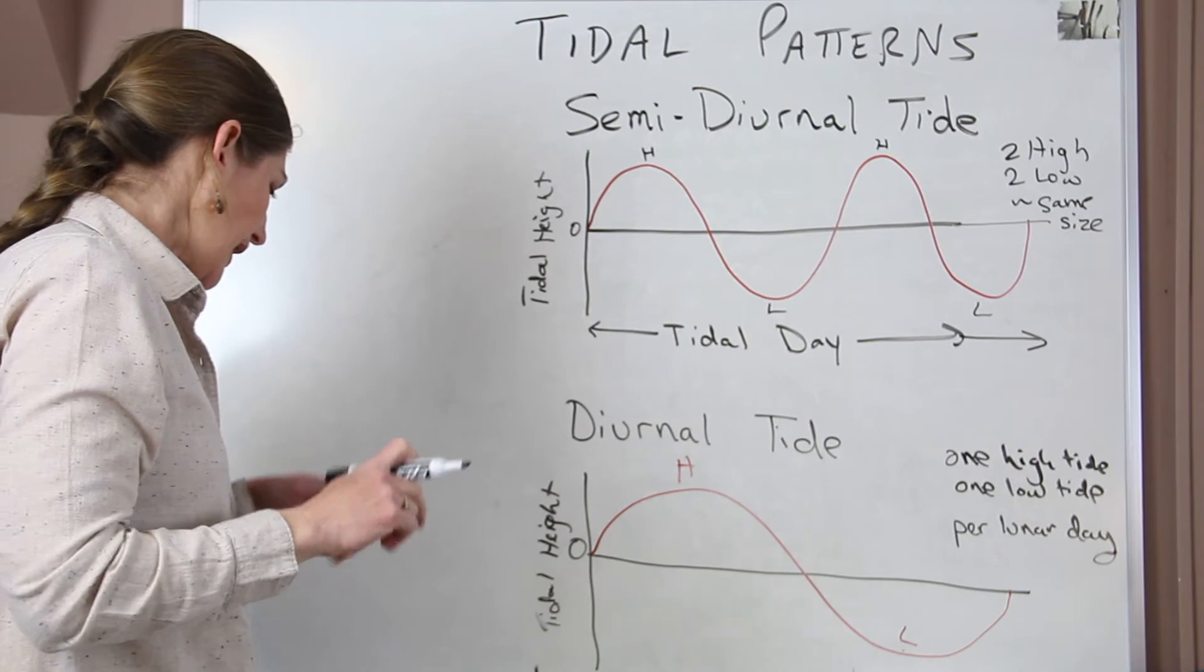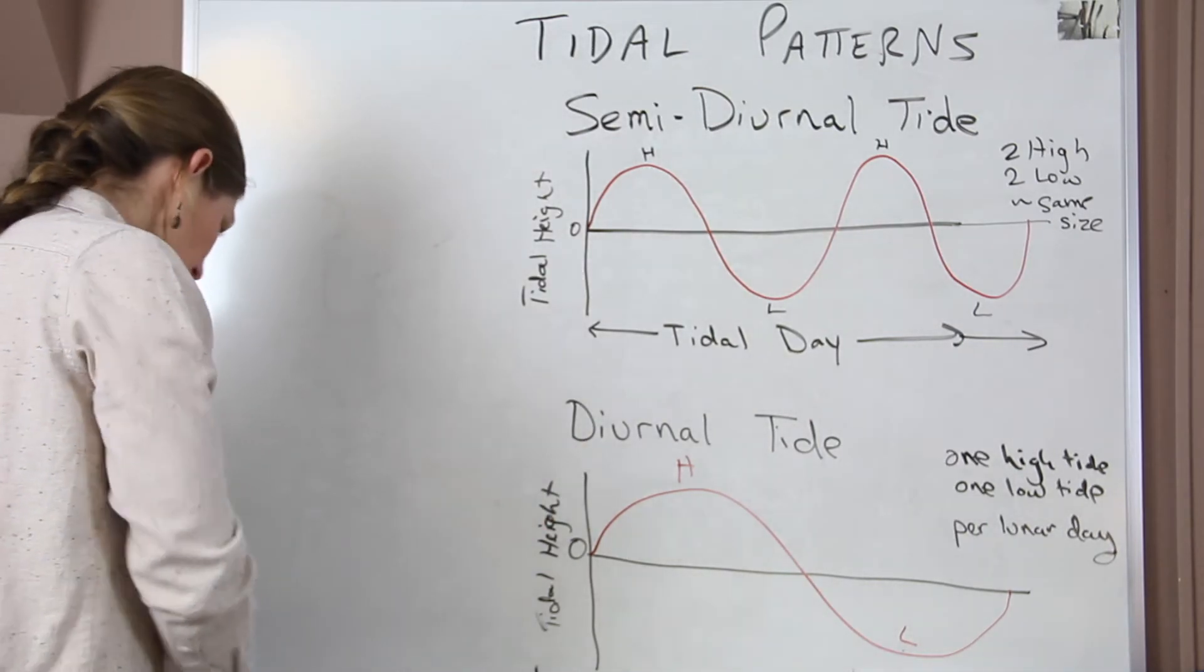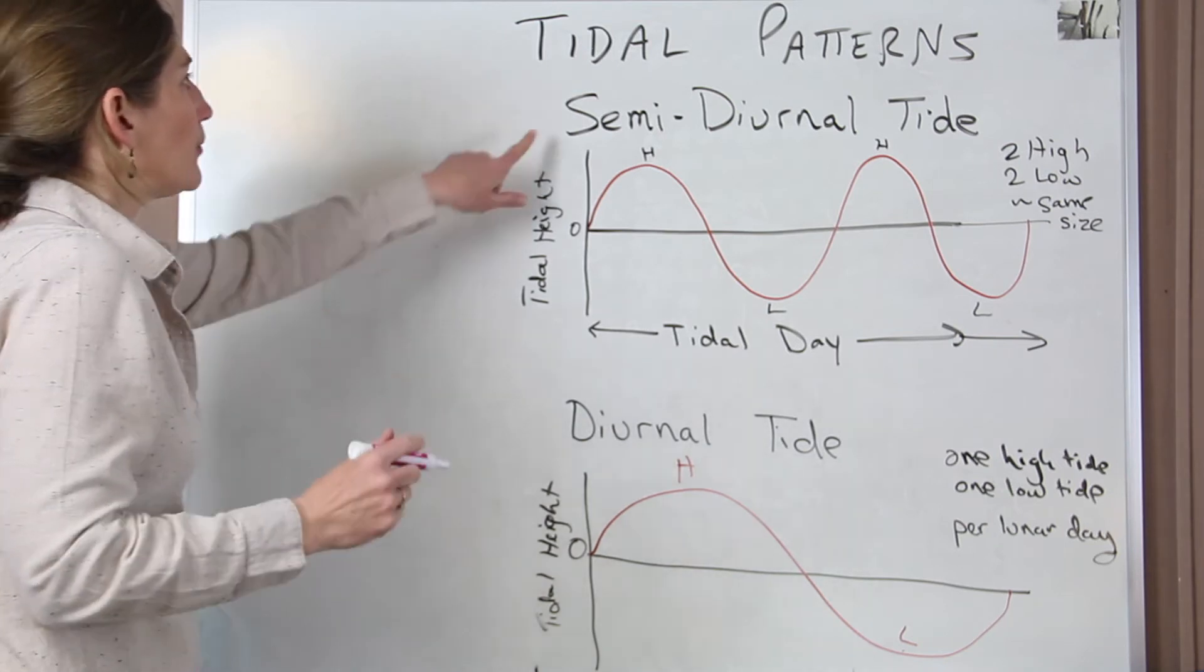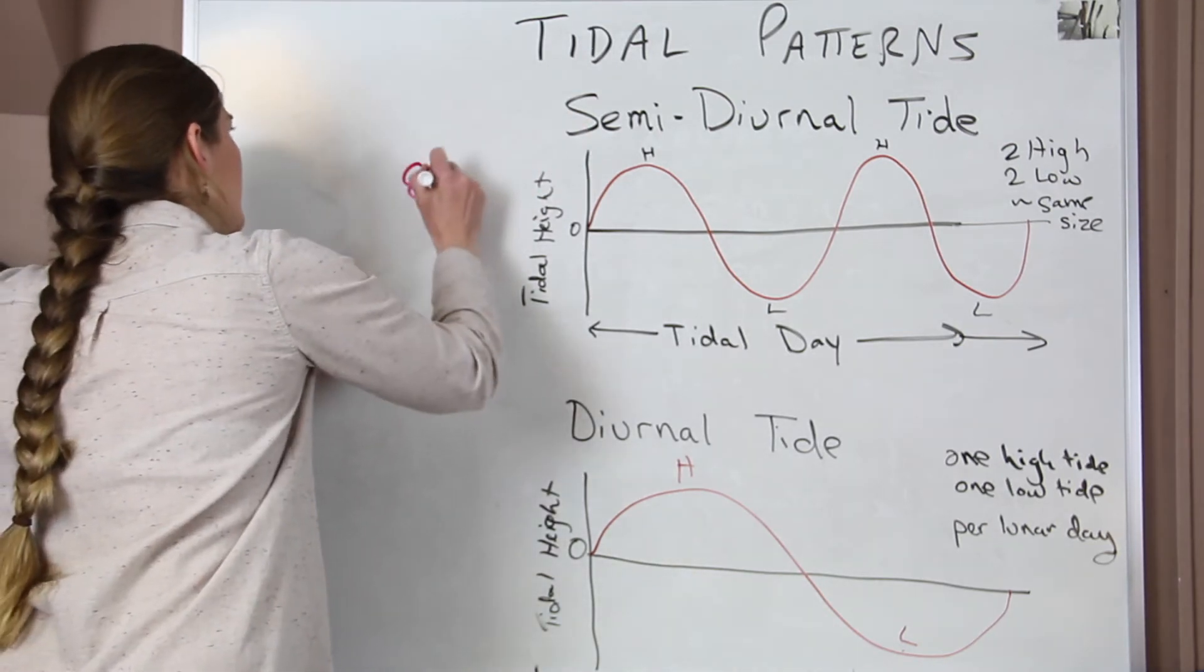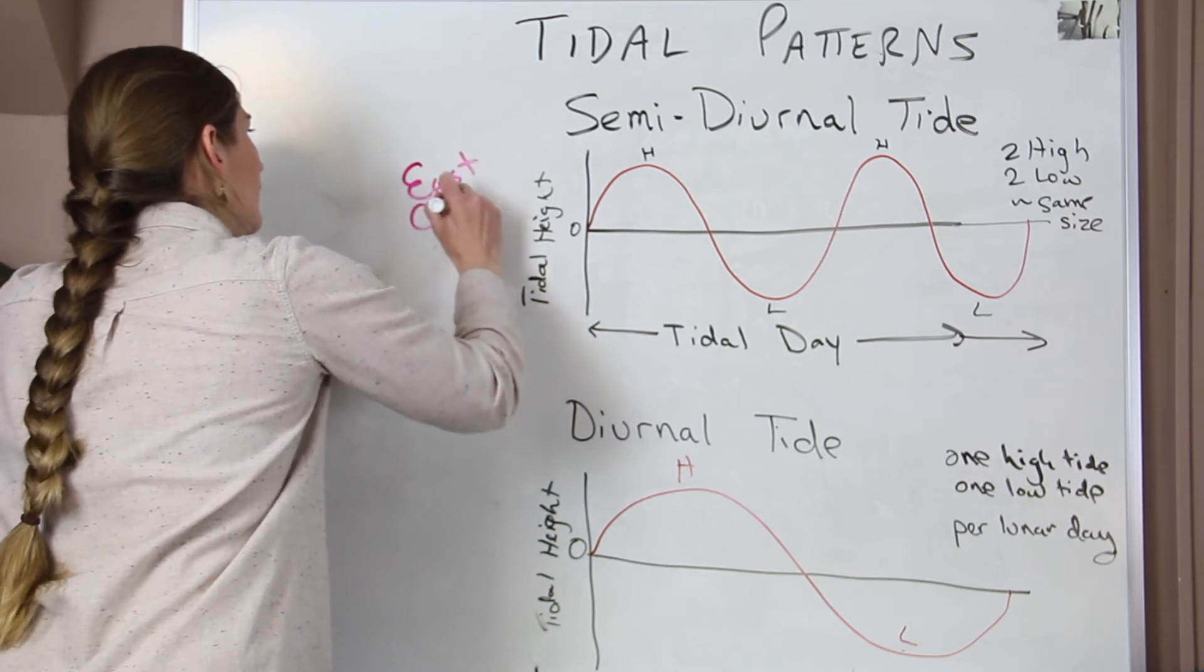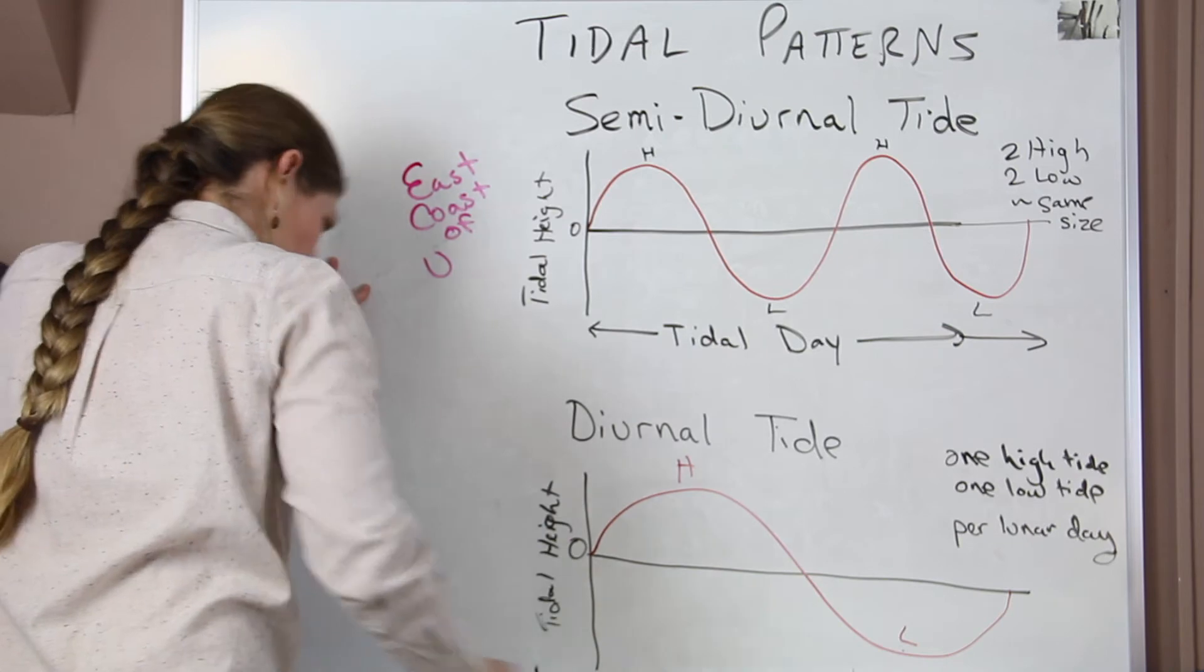Okay, now the last tide that we have, and then if you're wondering where this happens, I'll kind of write this in now. We would see semi-diurnal tides, they're common on the East Coast of the United States, or we'll just say North America.